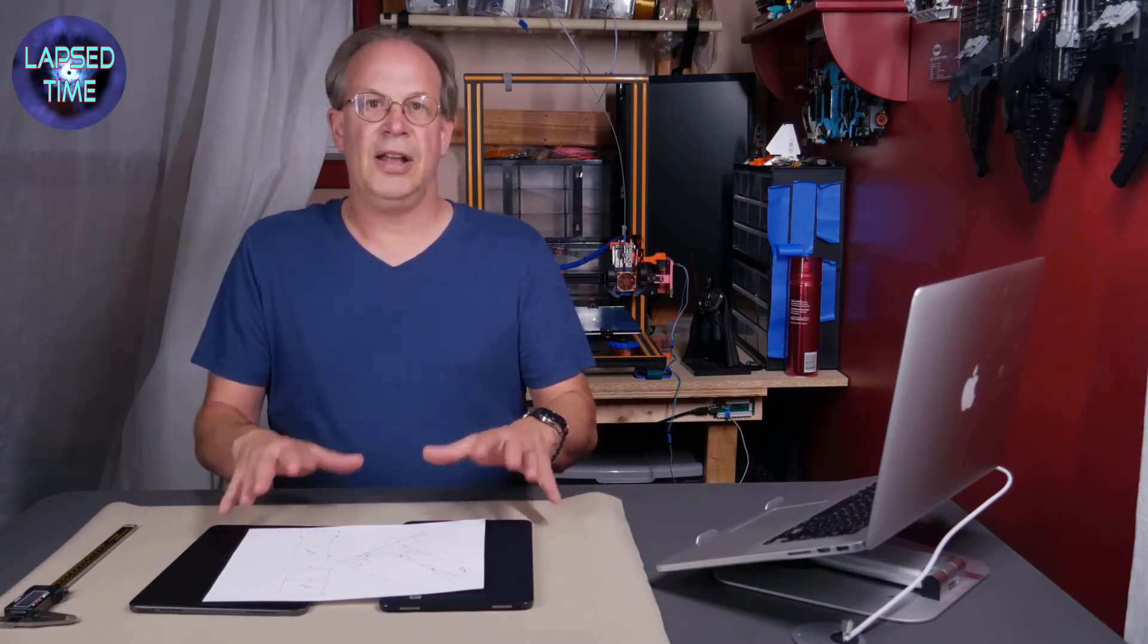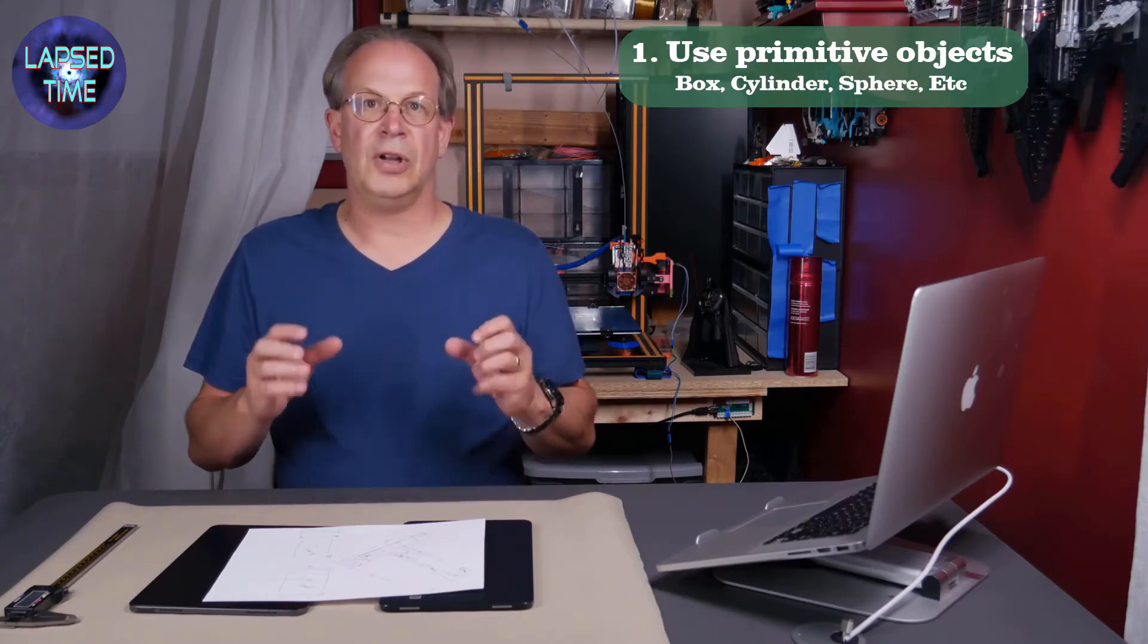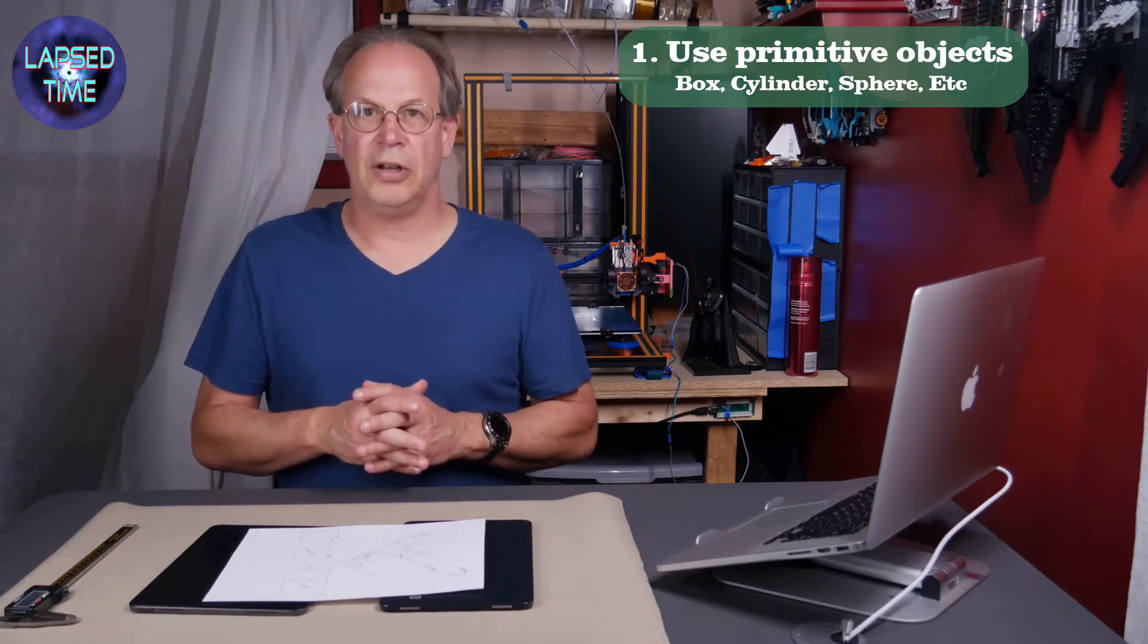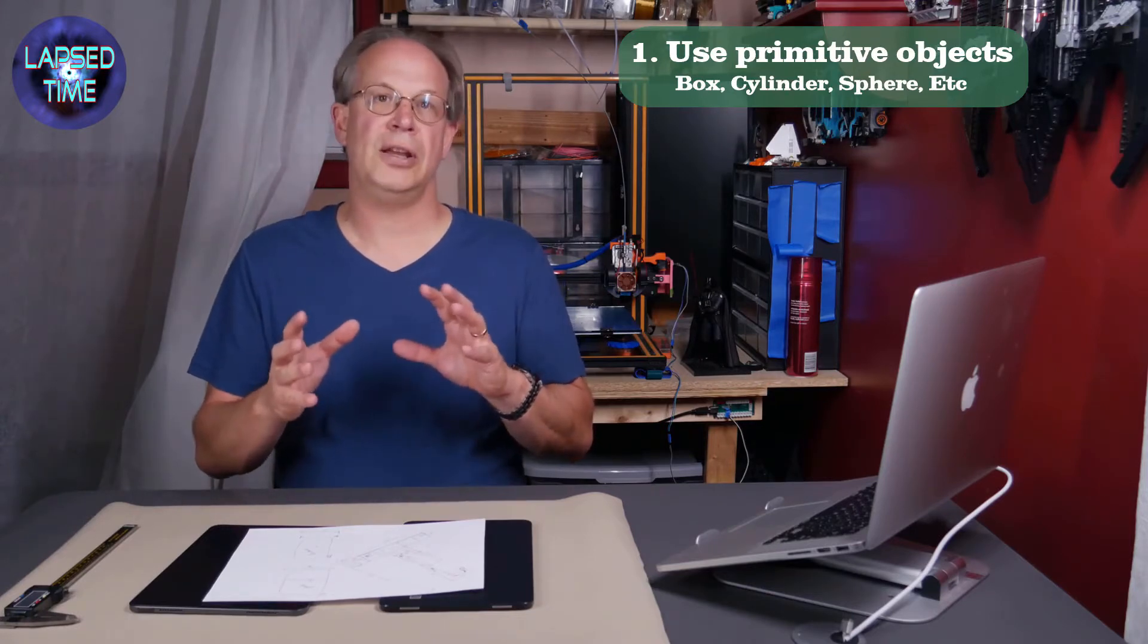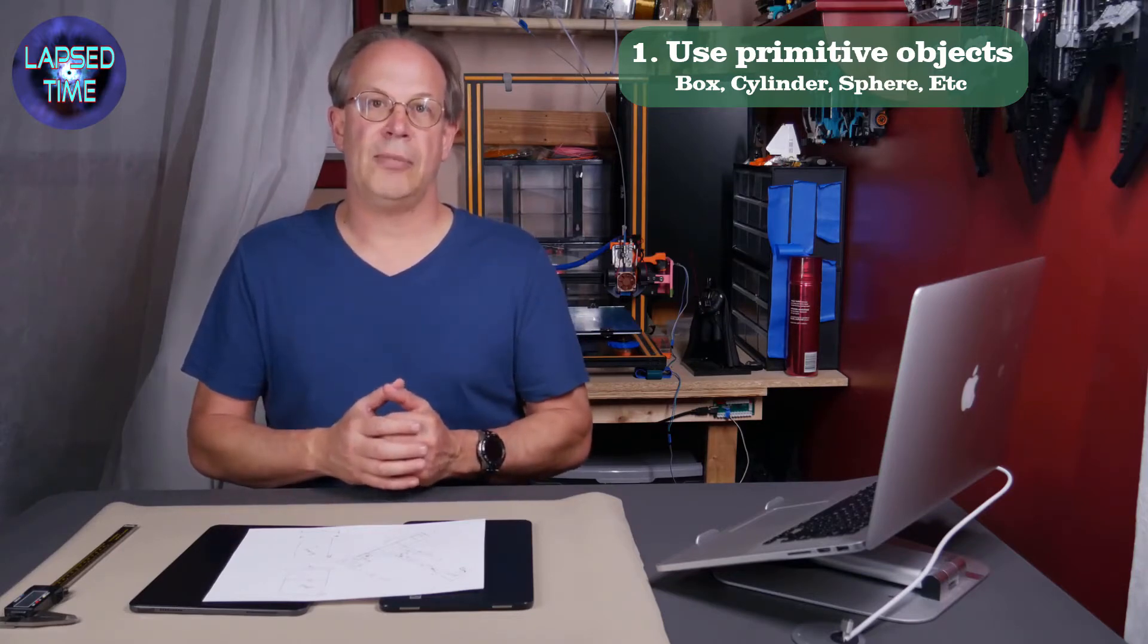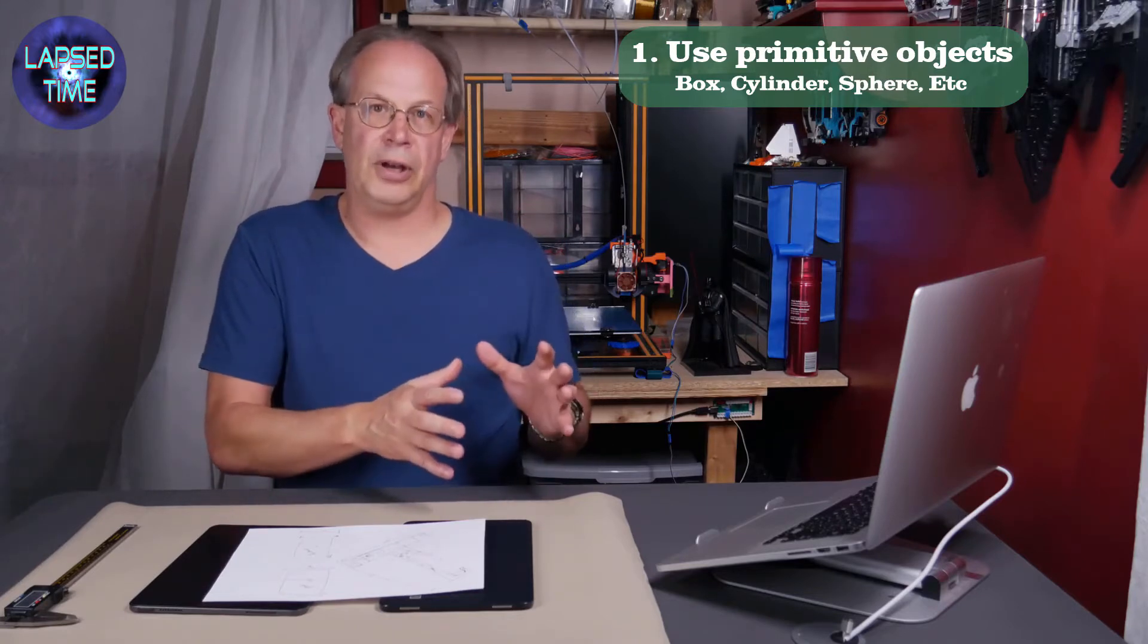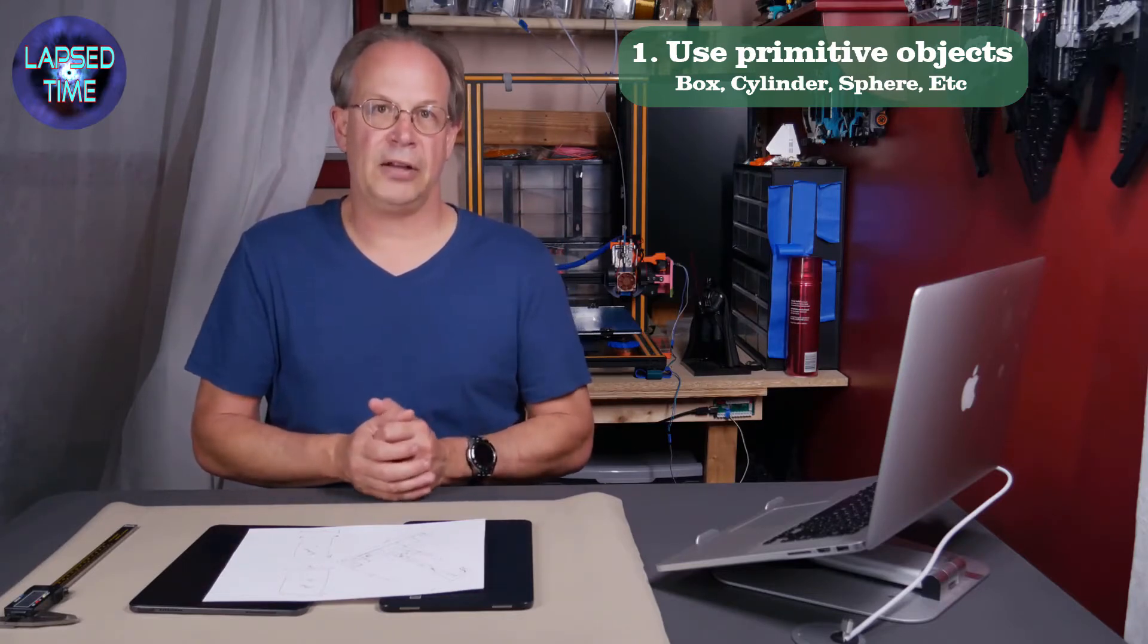There's a few things I like to keep in mind when I'm creating an object, especially when you're doing it on a 3D printer. One is I always try to use primitive objects, basic building blocks for creating just about any type of manufactured product. Now if you want to create characters, if you want to create more organic objects, you're going to want something more of a sculpting program than a 3D modeling, 3D CAD type of program.